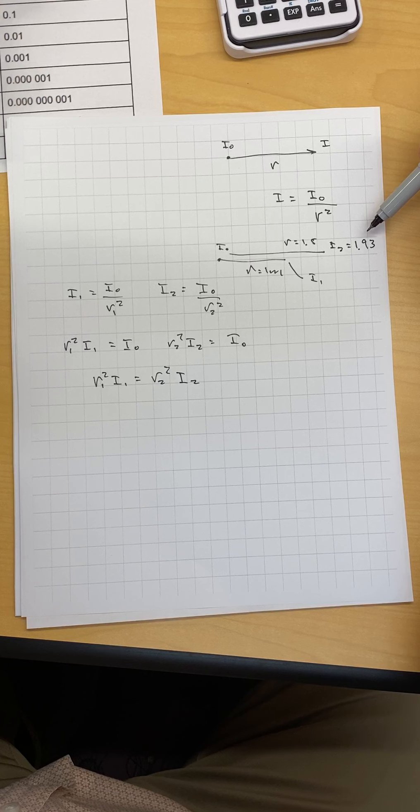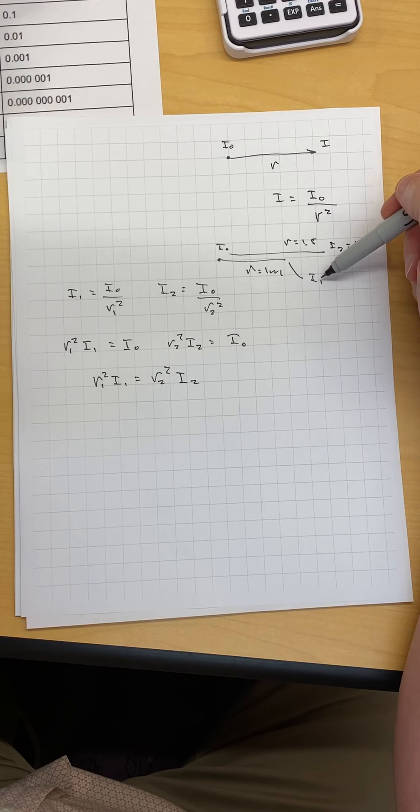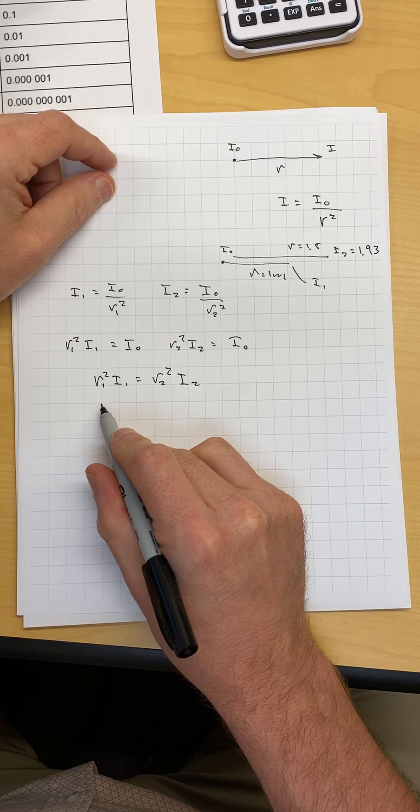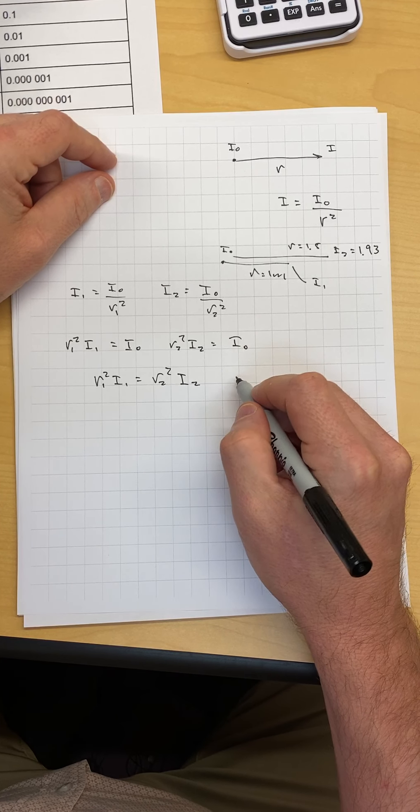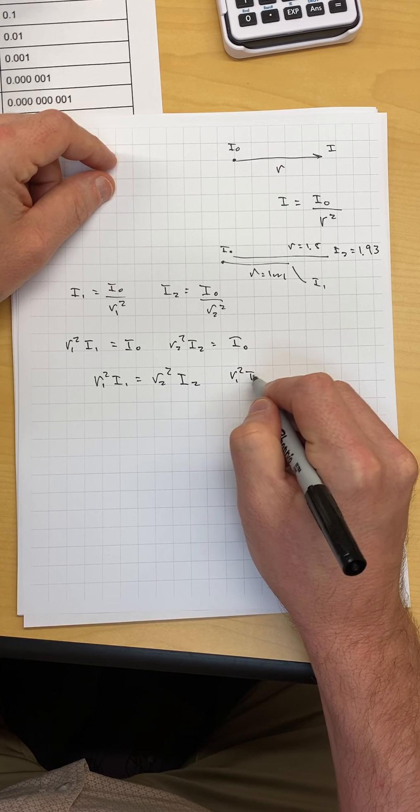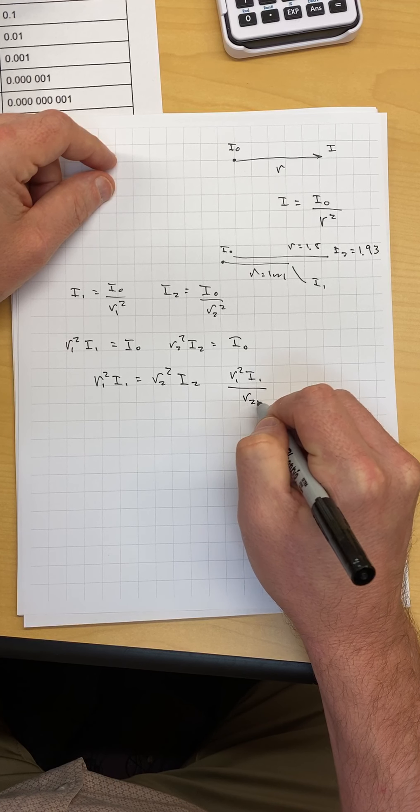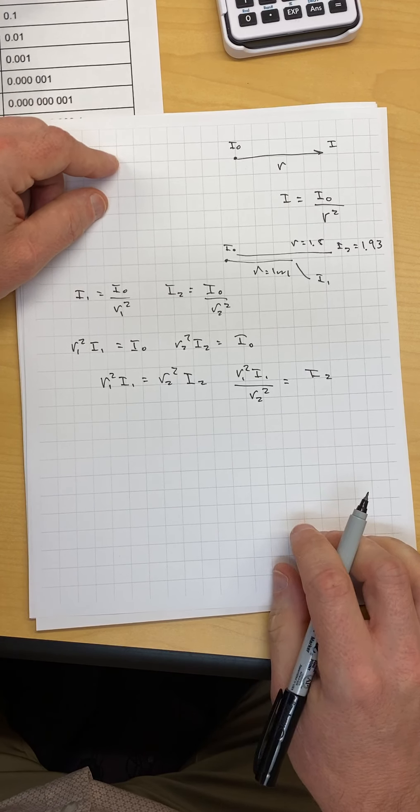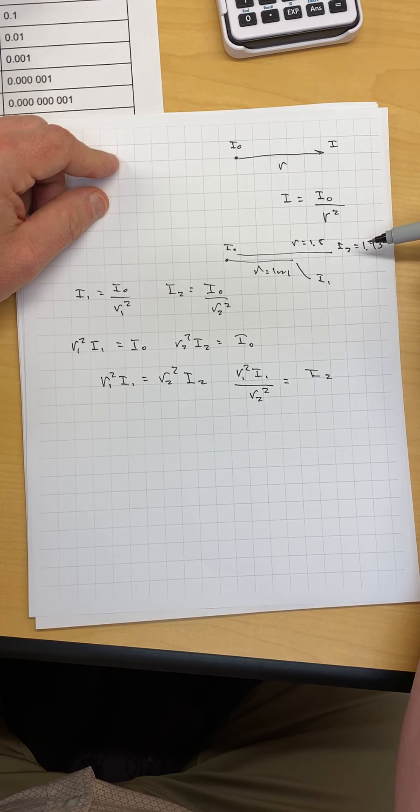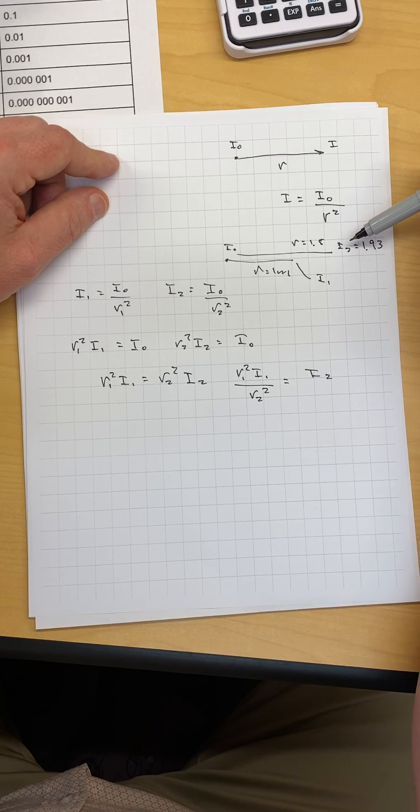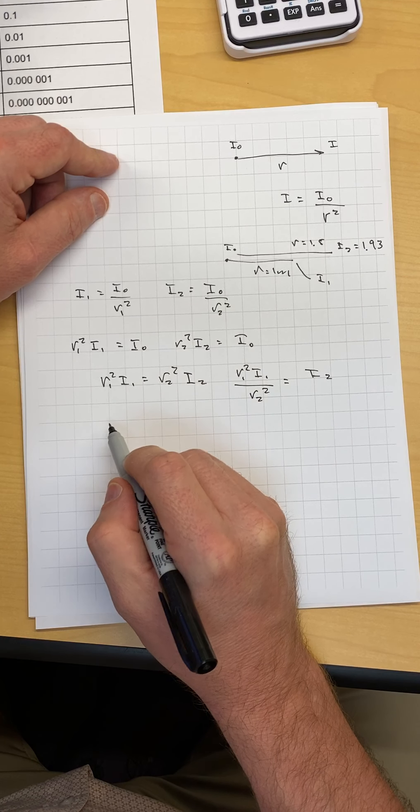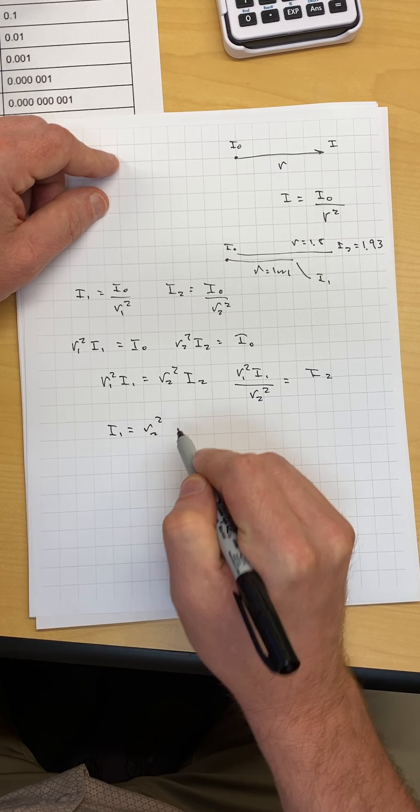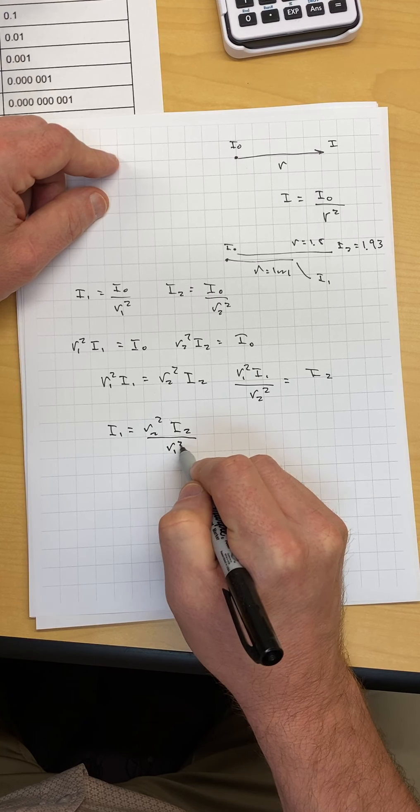So if I2 is 1.93 and I1 is here, I'm going to solve for I1. I'm going to take this R2 and bring it down to there. And I get R1 squared I1 divided by R2 squared is equal to I2. Oh, I did that the opposite way because the way I wrote it here is I2. So I'm going to do it the other way. I1 is equal to R2 squared I2 divided by R1 squared.